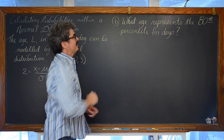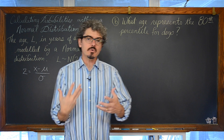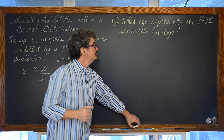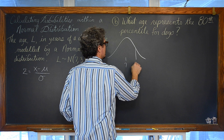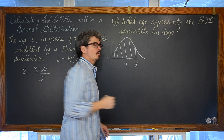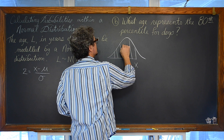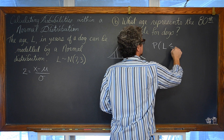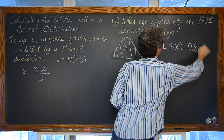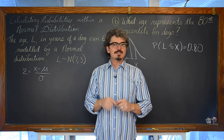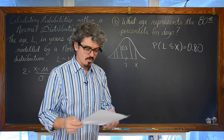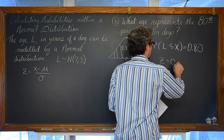For Part B: what age represents the 80th percentile for dogs? In other words, how old would a dog need to be such that 80% of all dogs are that age or younger? We want to find some value of x such that P(L ≤ x) = 0.80. Using the table, you go inside the body of the table, find the closest value to 0.80, and read off the z-score, which gives z approximately equal to 0.84.